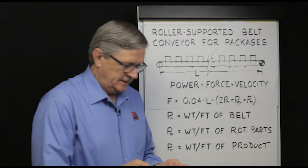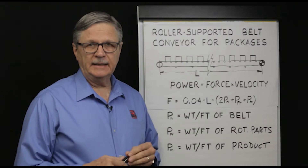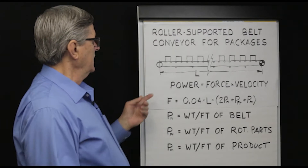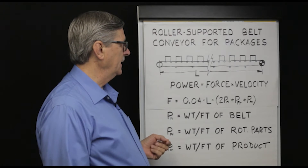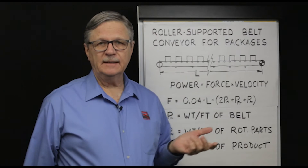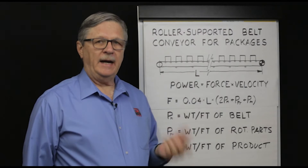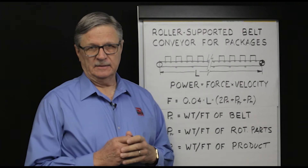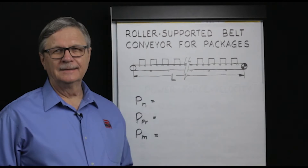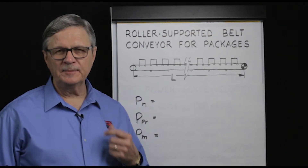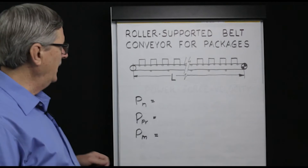Now let's see how to use the equation by selecting a set of parameters. We'll assume this is a 100-foot-long conveyor belt. At any point in time it will be holding 25 packages with an average weight of 50 pounds each. The belt speed is 100 feet per minute. These are the simplifying assumptions we can use to calculate belt pull and required power.